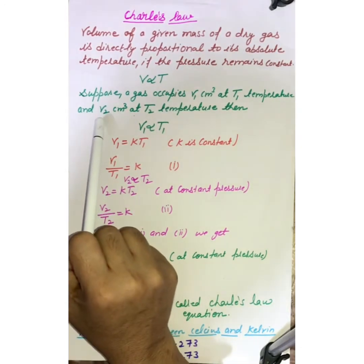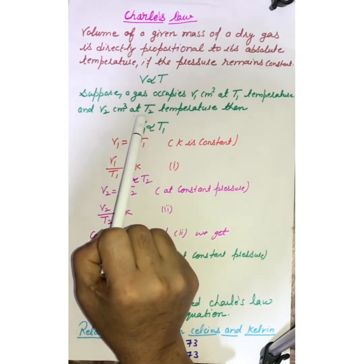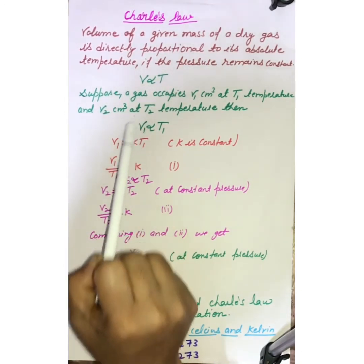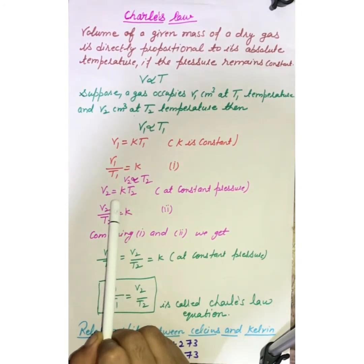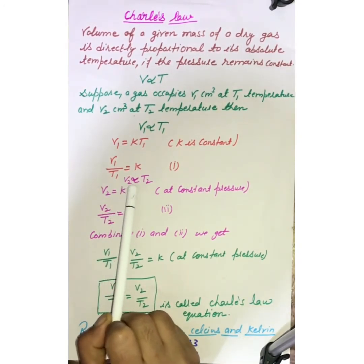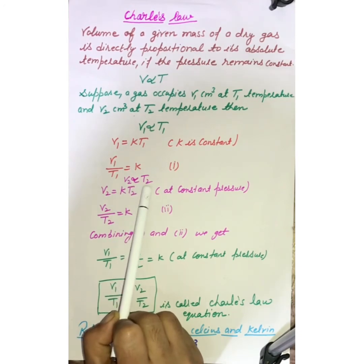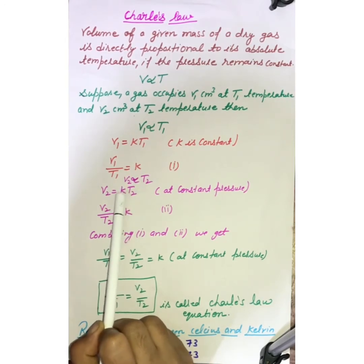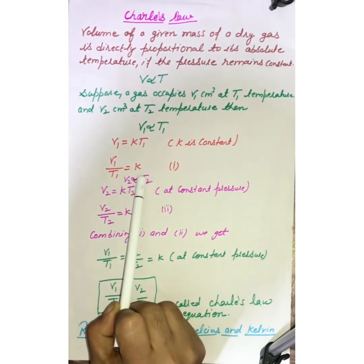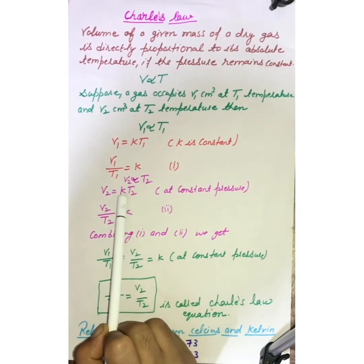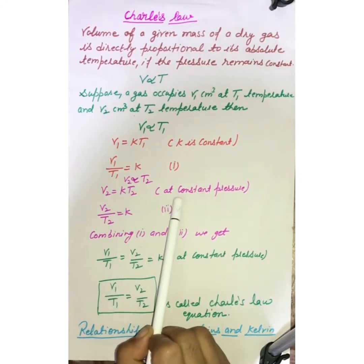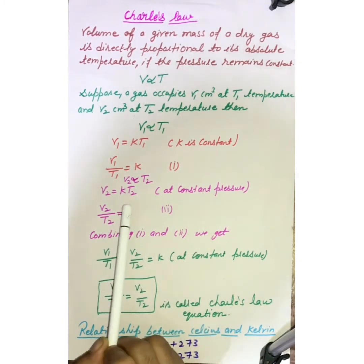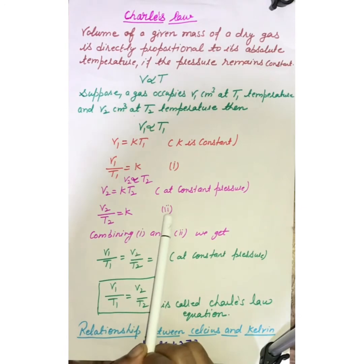Then, final condition, if the volume is V2 cm³ and temperature is T2, then what will be the expression in this gas law? V2 is directly proportional to T2 and this expression will become V2 equals to K T2. Again, I am repeating, this is proportionality constant. And the pressure is constant in the Charles law. Here, this expression will become V2 upon T2 equals to K. Here, we will put 2.